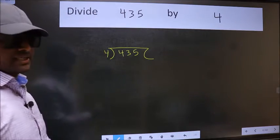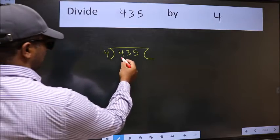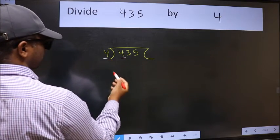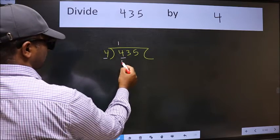This is your step 1. Next, here we have 4, here also 4. When do we get 4 in the 4 table? 4 ones is 4.